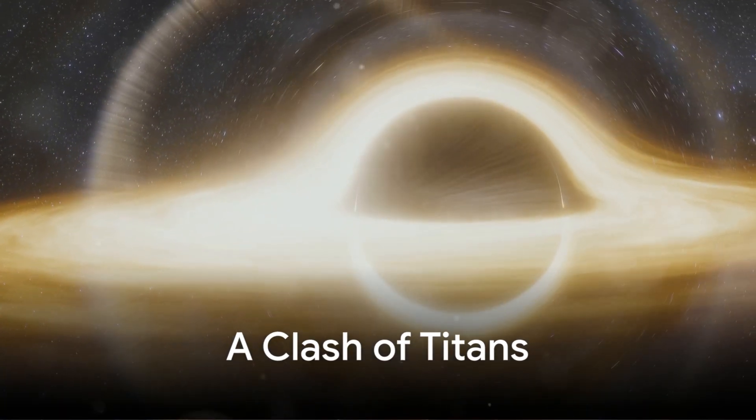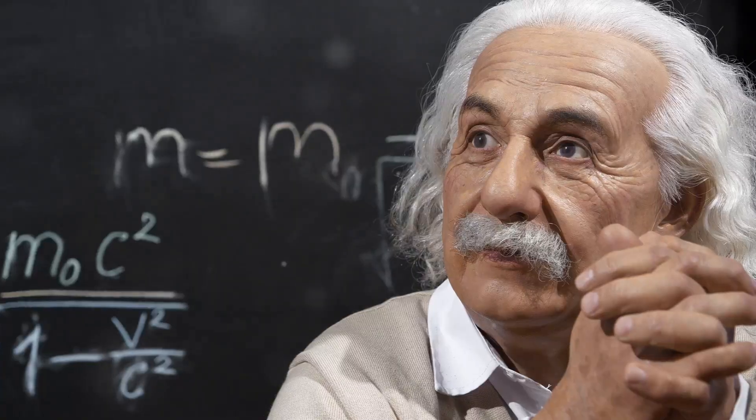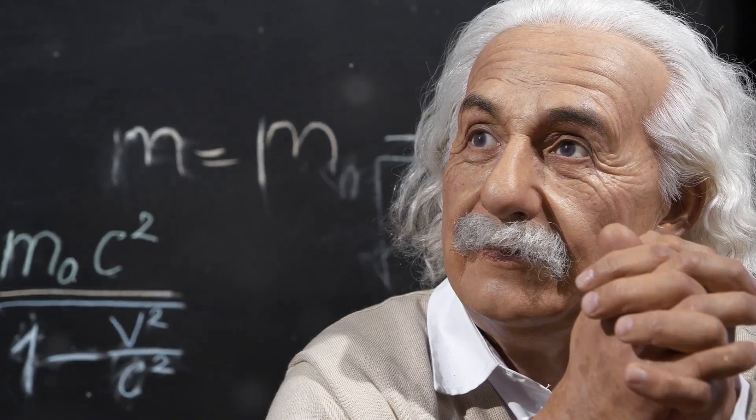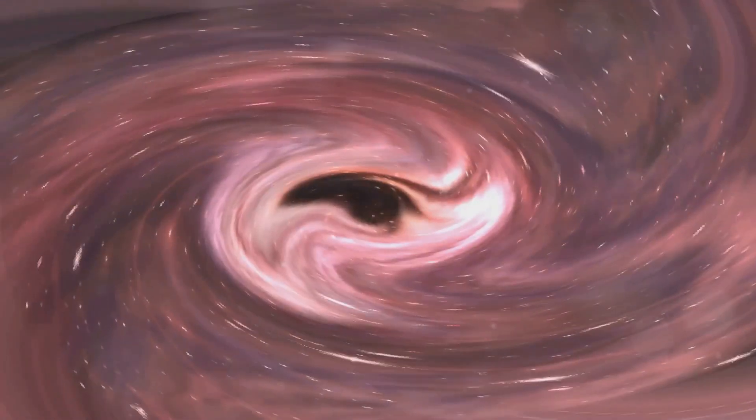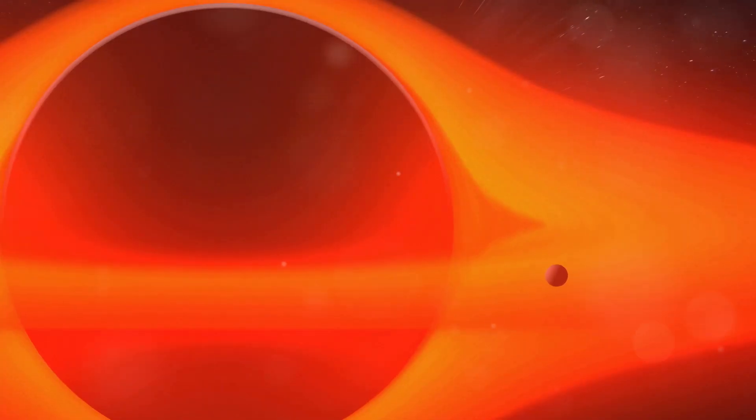The black hole information paradox is a clash between two of the most successful theories in physics. Einstein's theory of general relativity and quantum mechanics. General relativity tells us that information should be destroyed within a black hole, while quantum mechanics insist that it cannot be. This fundamental conflict is what makes the information paradox so profound, so perplexing, and so important to solve.